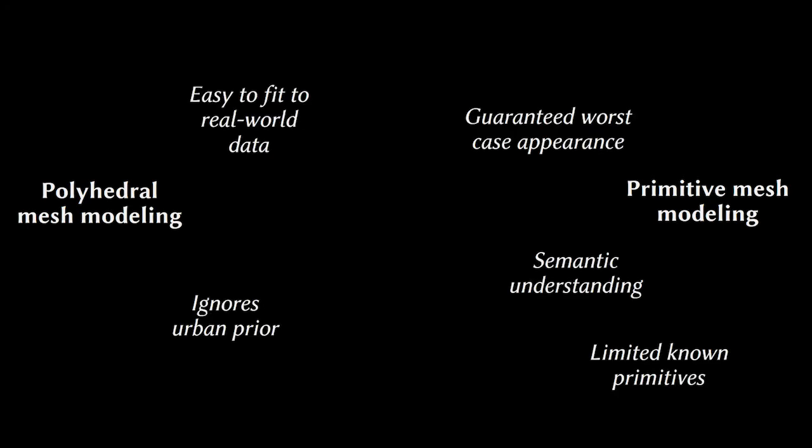To briefly discuss existing work in this area, we can decompose existing systems into two major categories. One is polyhedral mesh modeling, where we're trying to fit polygons or triangles to our data source, and the other is primitive mesh modeling, where we're trying to fit more advanced primitives, like cubes or pre-built roof sub-assemblies. These different systems have a variety of advantages and disadvantages. Polyhedral mesh modeling is very easy to fit but ignores urban priors. Even though we know we're modeling an urban area, polyhedral mesh modeling is often unable to use this data.